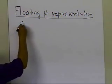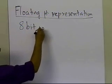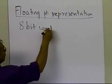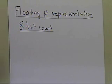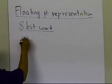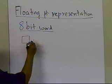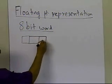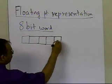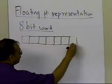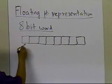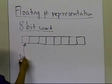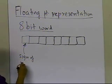So what I'm going to do is take an 8-bit word. We're assuming a floating-point representation that uses 8 bits. I'm going to distribute these bits: 1, 2, 3, 4, 5, 6, 7, and 8. This first bit, for example, is used for the sign of the number.